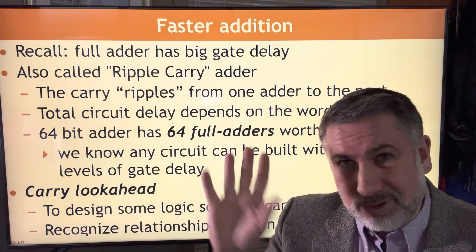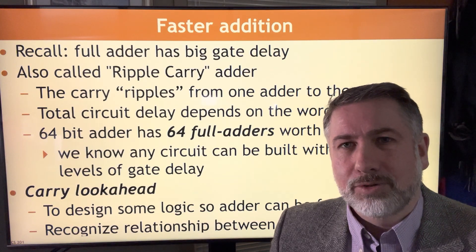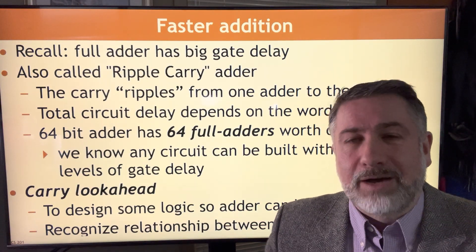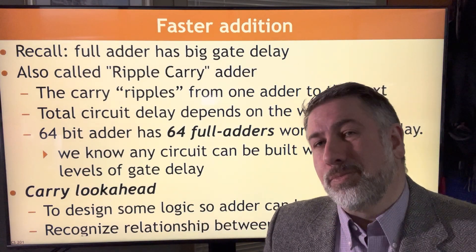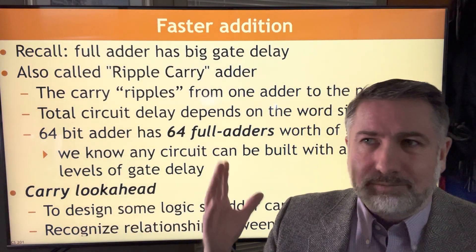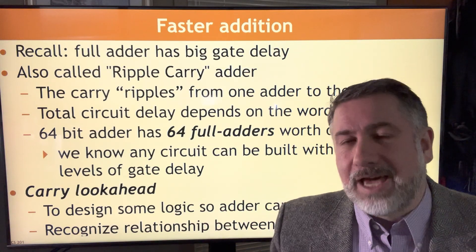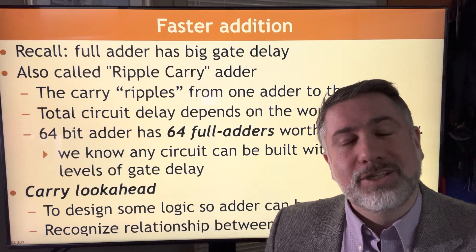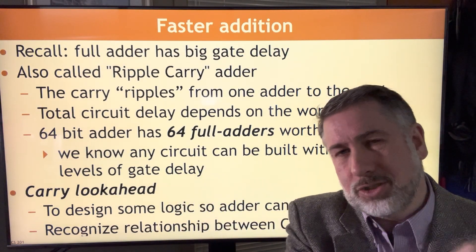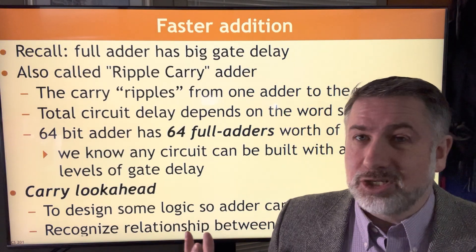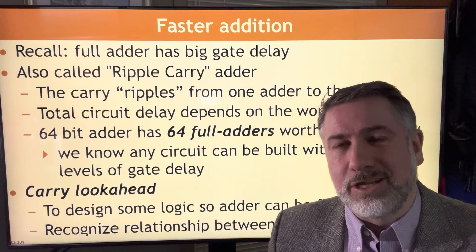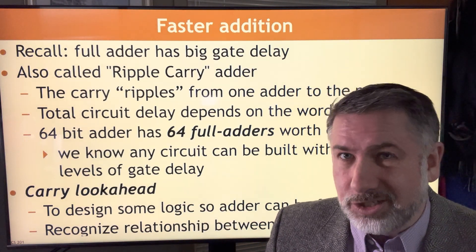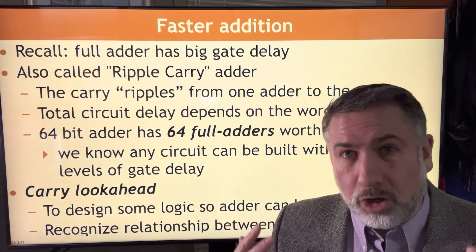We know from Amdahl's law — and we'll get to parallel computing later in the series — that if you can speed up a portion of your process, that will make your entire system faster. But if there's a portion of your process that can't be sped up, that will make your entire system limited to the speed of that process. Addition is one of those processes. If we use a regular adder where the carry ripples from one box to the next, then for a really large adder — like a 64-bit or 128-bit adder — it will take an enormous amount of time, and addition is something we're going to be doing all the time.